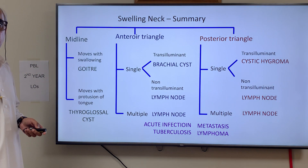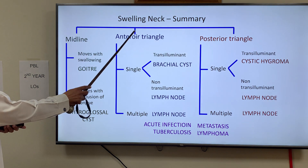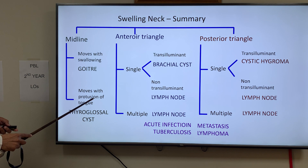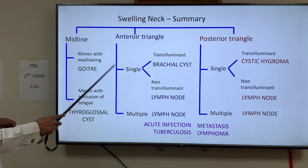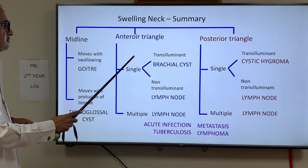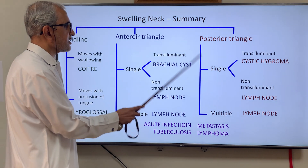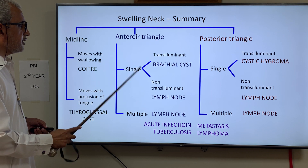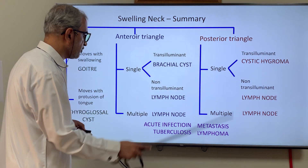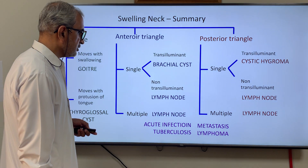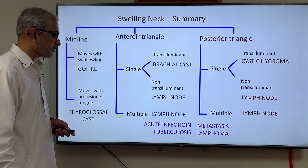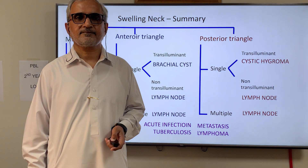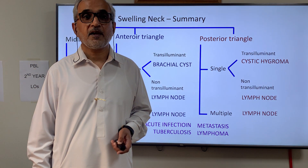Coming back to the original concept map: swelling of the neck — midline swelling that moves with swallowing is a goiter; midline swelling that moves with protrusion of the tongue is a thyroglossal cyst. Anterior triangle single cystic is a branchial cyst; posterior triangle single cystic is a cystic hygroma. Single solid lymph node in anterior or posterior triangle; multiple lymph nodes — the commonest causes are acute infection, metastasis, tuberculosis, lymphoma, and sarcoidosis. Have a good day; I hope you enjoy yourself and have happy moments.